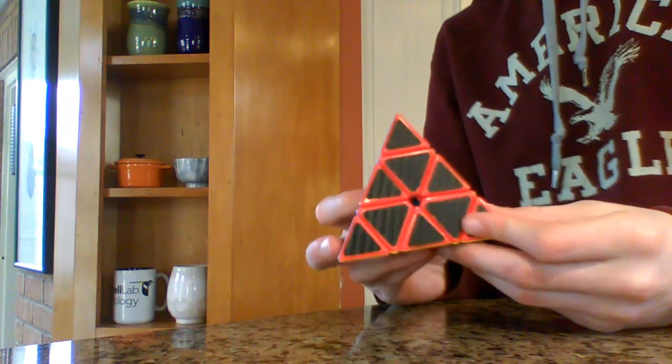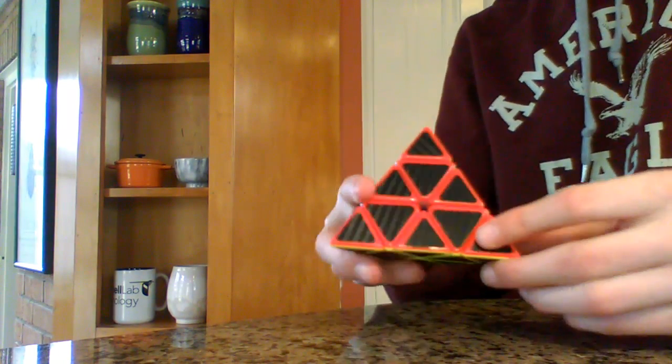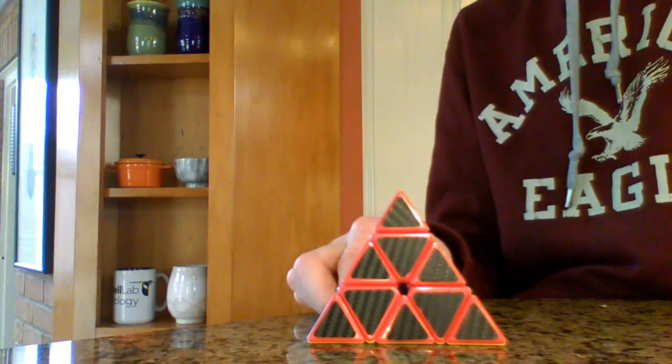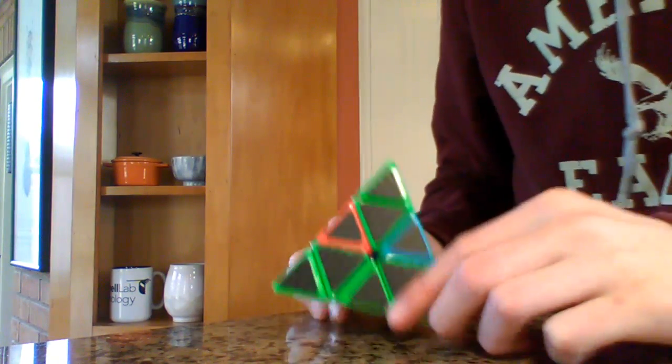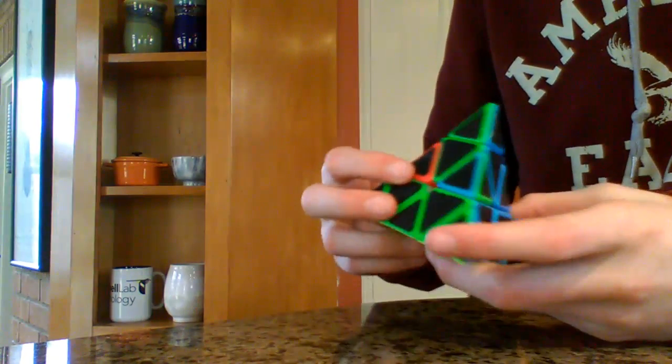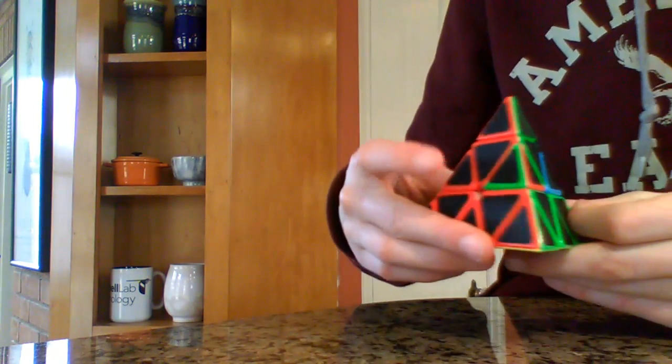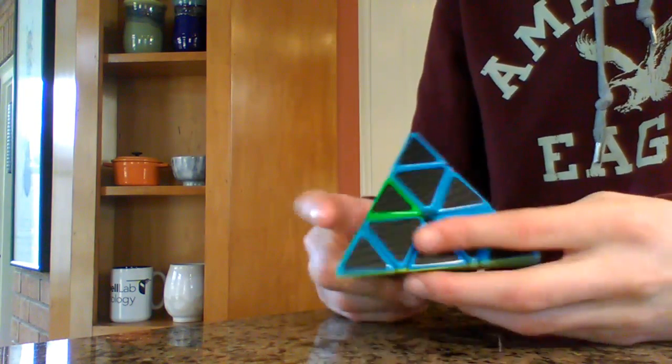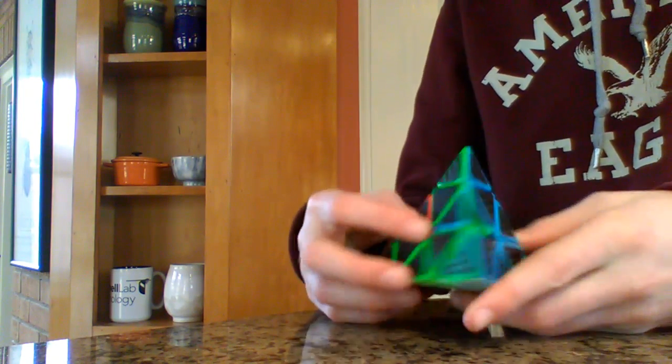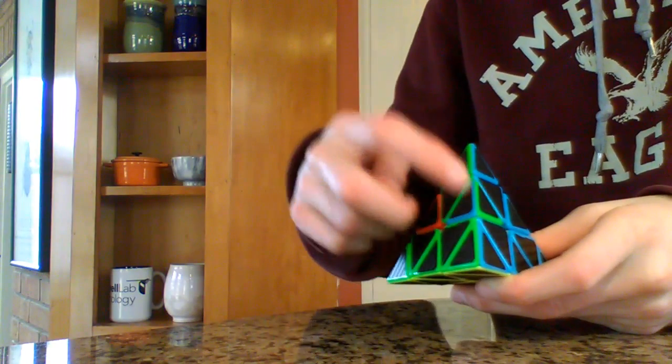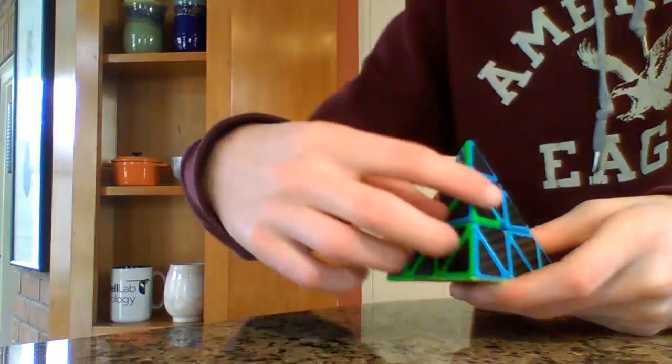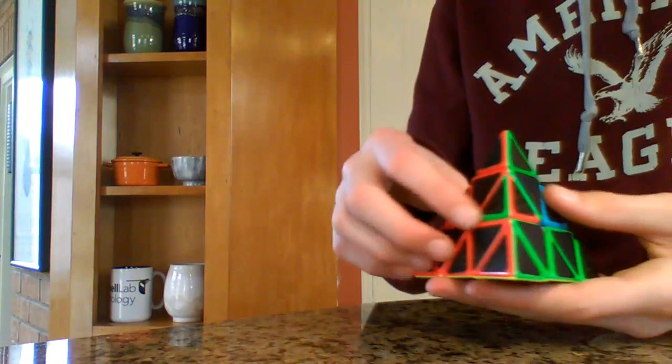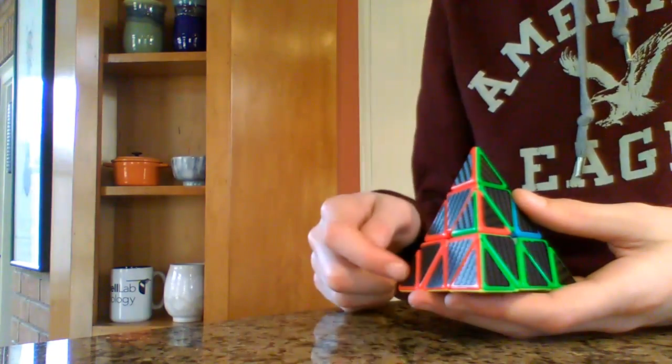This is the final algorithm where we have two edges left. This side is blue and this side is green, but this corner is blue and green in the wrong orientation. Same with this side—the edge is red and green but flipped. We want to swap those two.